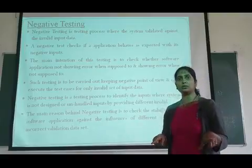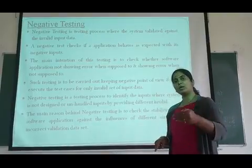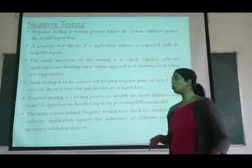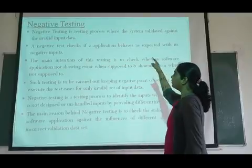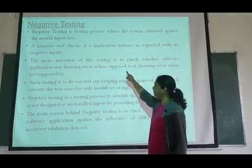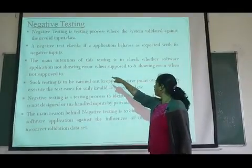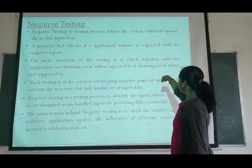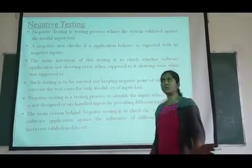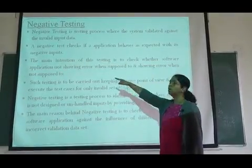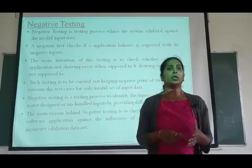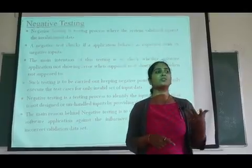The meaning is different here. In positive testing, where we expect an error it shows the error, and where we do not expect an error it does not show one. But in negative testing, we are not expecting the error but it is showing, and somewhere we are expecting the error but it is not showing. That is the main difference, and that is nothing but the negative black box testing.